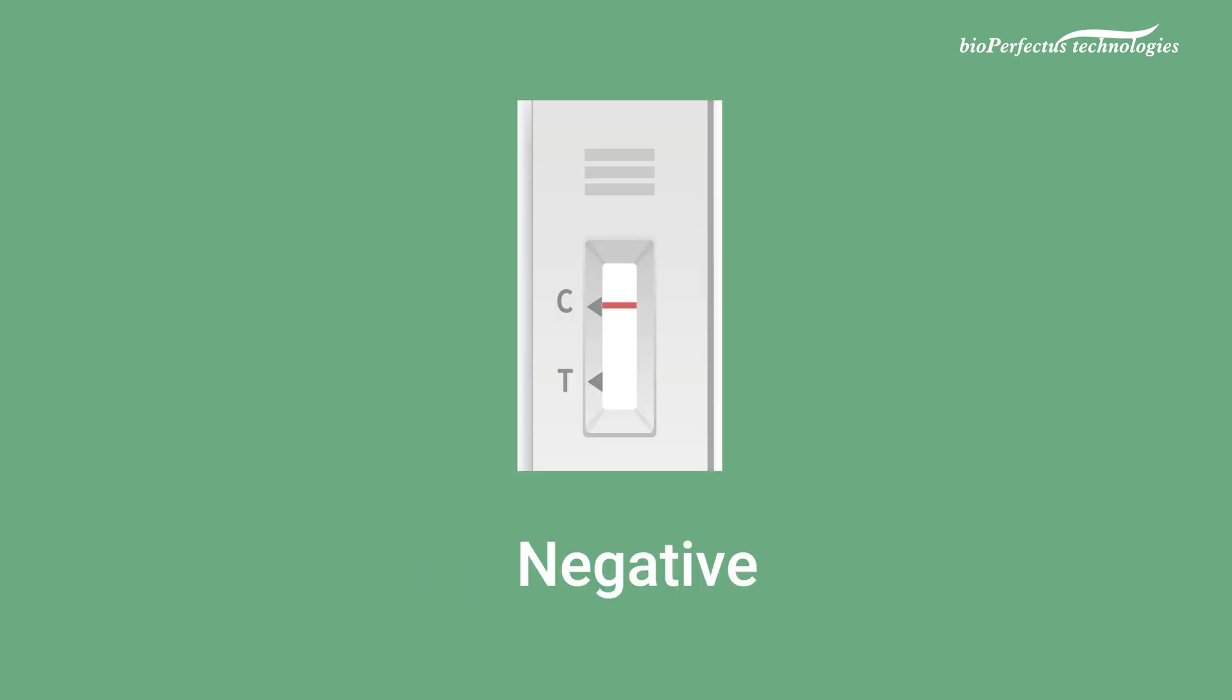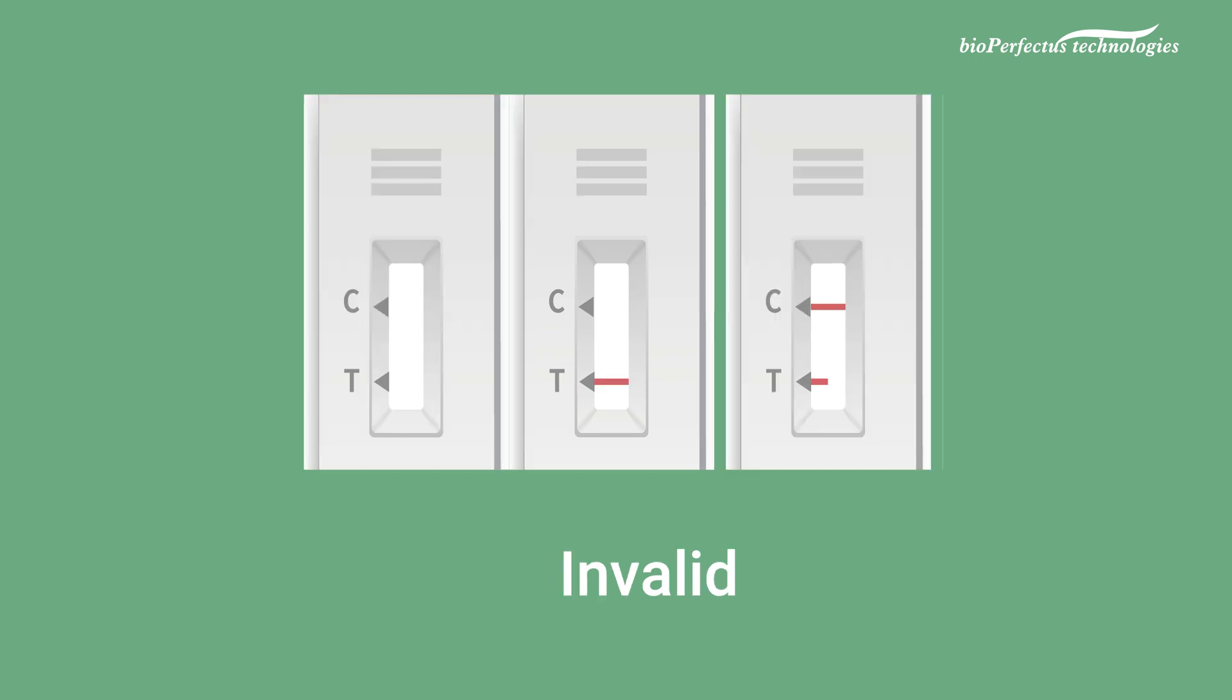If there is only one line appears at C area, this indicates a negative result. If there is no line appears at the C area or T line is not complete, which indicates the test is invalid for some reason, the test should be performed again with a new pre-filled tube and test strip.